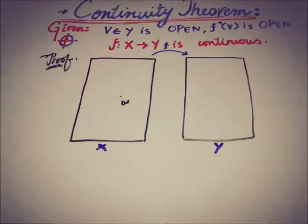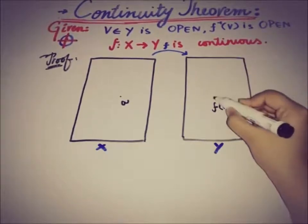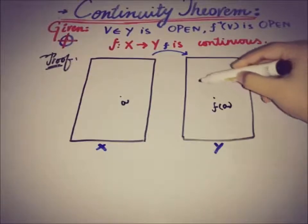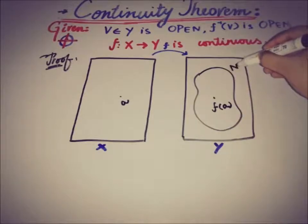If there is a point a, then there must be an image in Y and that is f(a). So also take a neighborhood of this point. This is the neighborhood, let's call it N.